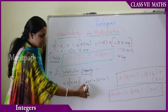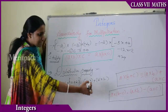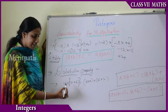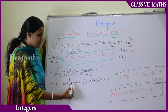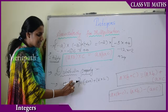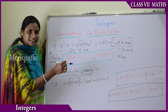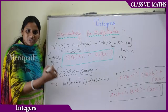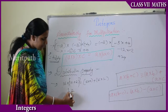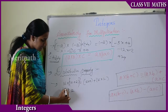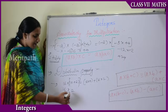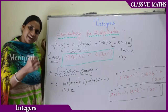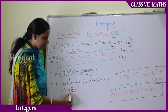We write: 16 into (10 plus 2) equals 16 into 10 plus 16 into 2. On the left side, first we add the elements in the bracket: 10 plus 2 equals 12, and then 12 into 16. Since 12 into 16 is not easy to multiply directly, we split it.